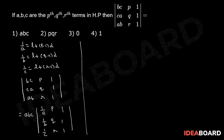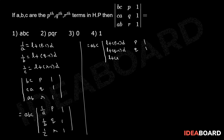This equals ABC into the determinant where 1/A is replaced by L + (P−1)D, similarly 1/B by L + (Q−1)D, and 1/C by L + (R−1)D, with P, Q, R in the second column and 1, 1, 1 in the third column.